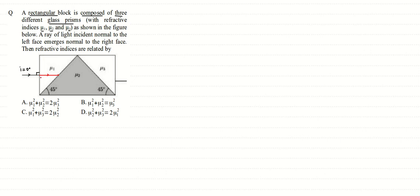Since the angle of incidence is zero, the angle of refraction is also zero, so r = 0. When the ray hits the next surface, if we draw the normal at that point of incidence, the angle of incidence becomes 45°, since this angle is 45° and the total angle is 90°. The ray is parallel to the base of the prism, so this angle equals 45°.